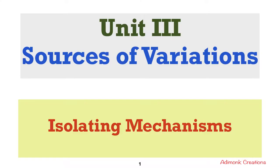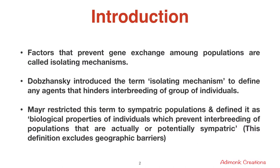Welcome to evolutionary biology class. We are in unit 3 on sources of variation, and the topic for today is isolating mechanisms. Isolating mechanisms are the factors that prevent gene exchange among populations. Dobzhansky introduced the term to define any agents that hinder interbreeding of groups of individuals.